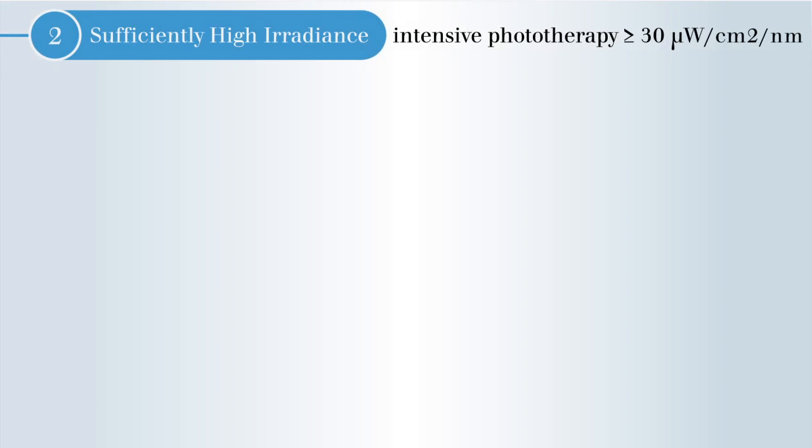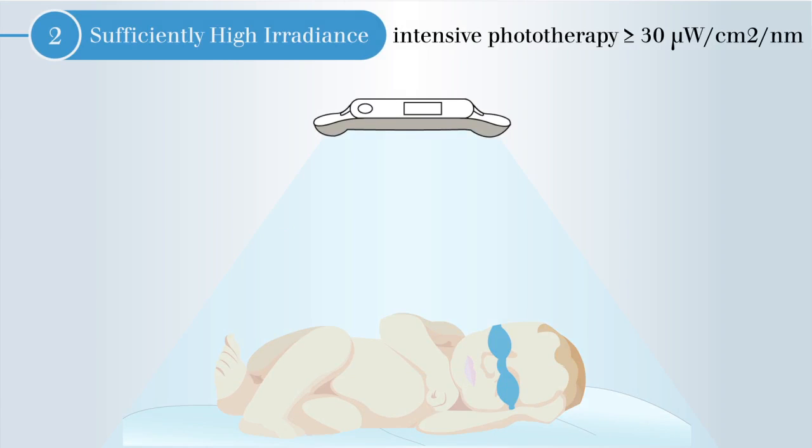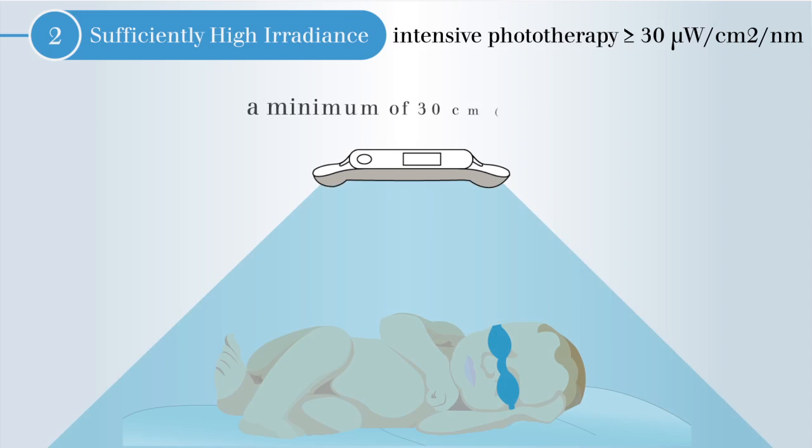The second consideration is sufficiently high irradiance. This is the power per area of light received by the neonate. To ensure maximum irradiance, the distance between the patient and light should be minimized. Appropriately calibrated radiometers, which ideally have a spectrum identical with the light spectrum, can help measure irradiance.